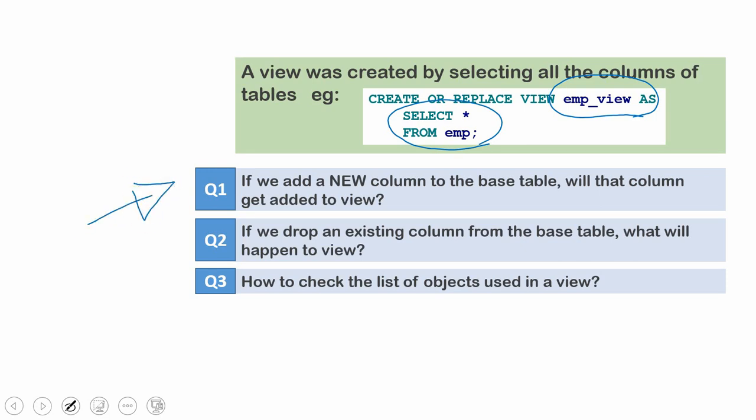The second question is: if we go and alter the base table to remove an existing column, what is the behavior — will it throw an error? The third question is: how can we find the list of objects — tables or any other objects — that are being used in a particular view?